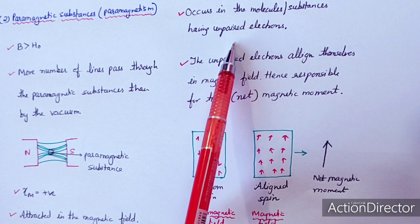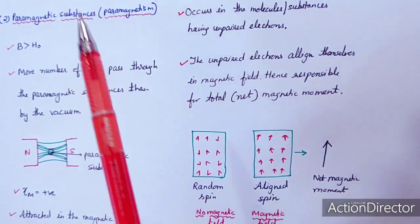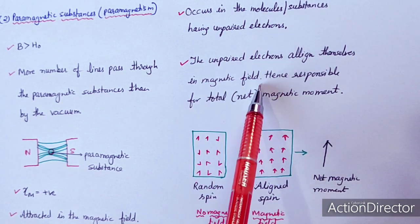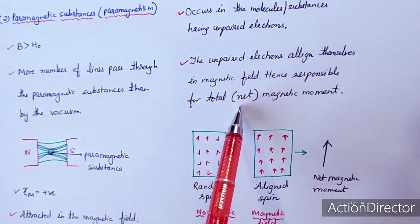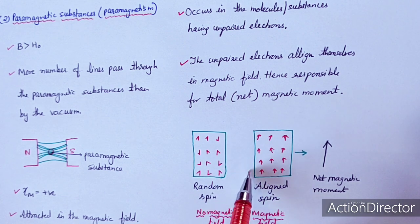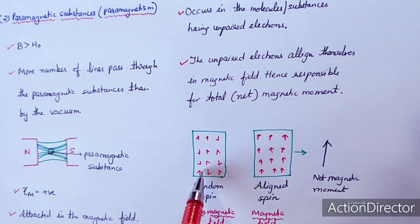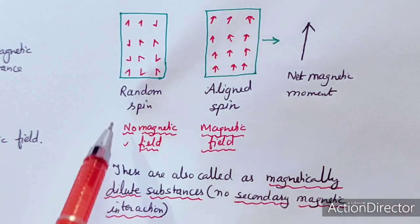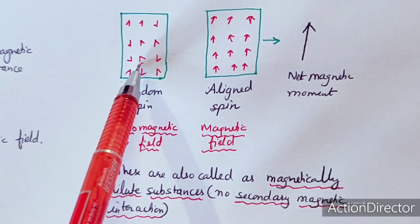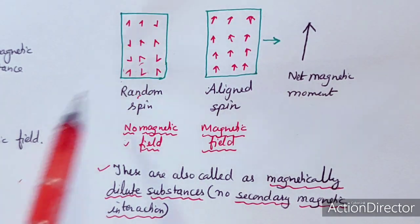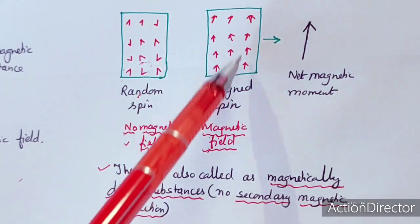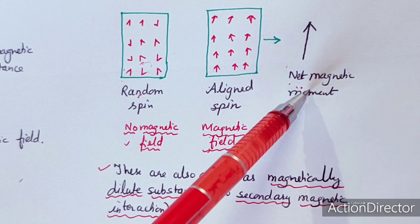The unpaired electrons align themselves in the magnetic field, hence they are responsible for the net magnetic moment. In the absence of a magnetic field, the spins are random — they may be in the upward or downward direction. But in the presence of a magnetic field, the spins align in the same direction, producing a net magnetic moment.